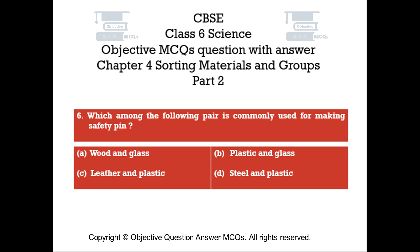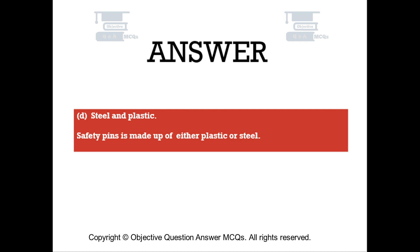Question number 6. Which among the following pair is commonly used for making a safety pin? Option A: Wood and Glass. Option B: Plastic and Glass. Option C: Leather and Plastic. Option D: Steel and Plastic. The right answer is Option D — Steel and Plastic. Safety pins are made up of either plastic or steel.